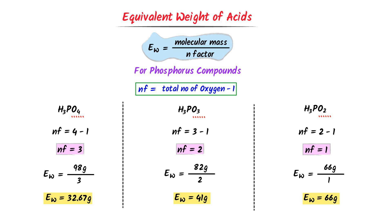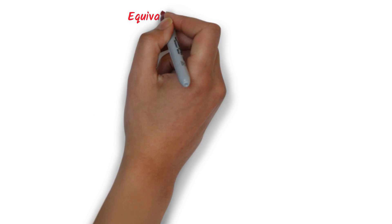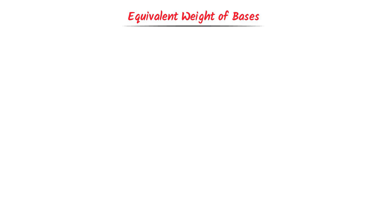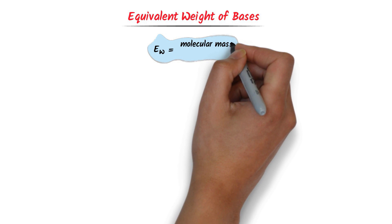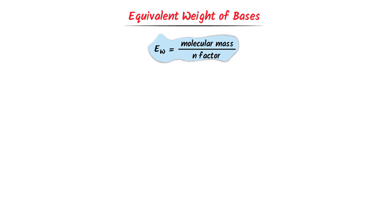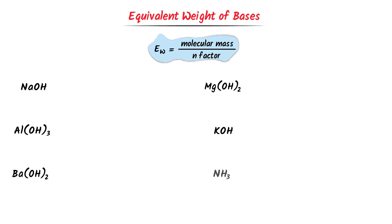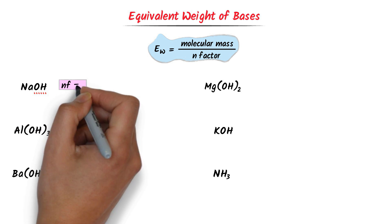Note down these important examples. Now we will learn equivalent weight of bases. We know that equivalent weight is equal to molecular weight upon N factor. In case of bases, we just look at the number of hydroxide ions. In case of sodium hydroxide, we can see that there is 1 hydroxide ion, so its N factor is 1.